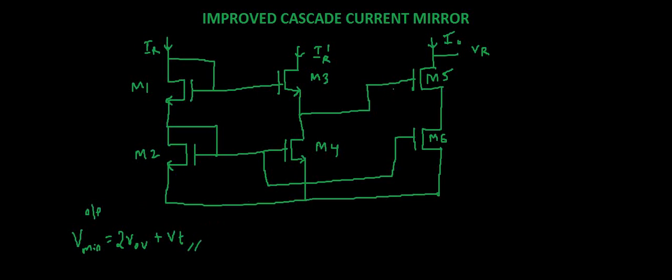This was the condition in the cascade current mirror. In this circuit we are going to reduce it further. In the last video itself I stated that the improved cascade current mirror will have output voltage as minimum as two times V overdrive.